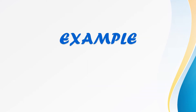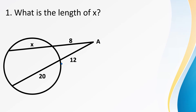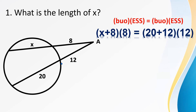Let's try to apply. What is the length of X? There are two secant segments meeting at point A. Since we don't know the full length of one secant segment because it has X, we add X and 8 to get the full secant segment length, then multiply by the external part, which is 8 — giving (X + 8) times 8. For the other secant segment: the whole is 20 plus 12, times the external secant segment of 12, giving (20 + 12) times 12.